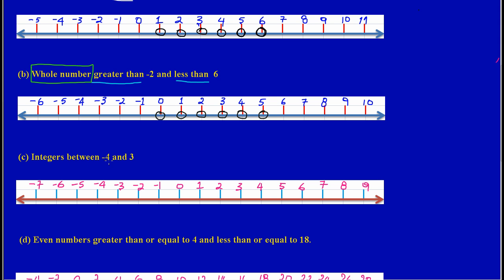Now part c we're speaking about integers between negative four and positive three. Now if I'm speaking about integers I know that I'm dealing with both negative and positive whole numbers. And the boundary that they gave us, and this is critical again, it states that between.